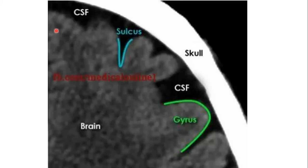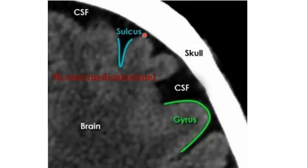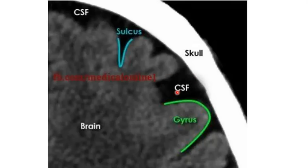On a magnified CT view of the brain, the brain parenchyma shows whitish gray matter on the surface and darker white matter beneath it, due to the myelinated nerve sheaths making it less dense. The pia mater, arachnoid, and dura mater line the inner table of the skull bone but cannot be individually seen on CT. The grooves are sulci and the elevated parts are gyri. The CSF-containing spaces are the subarachnoid space.